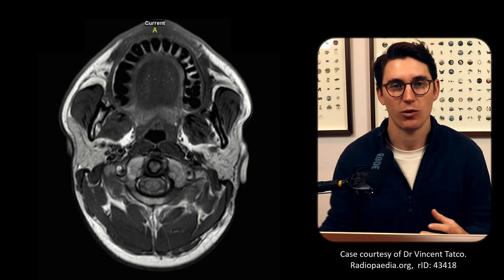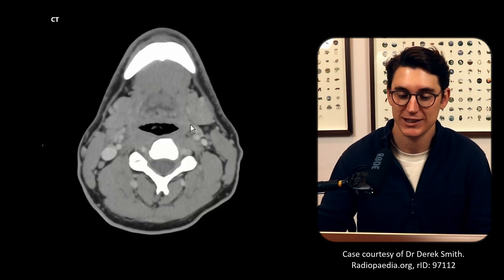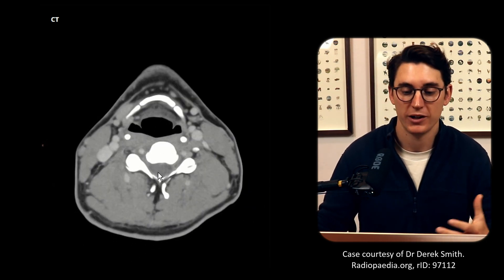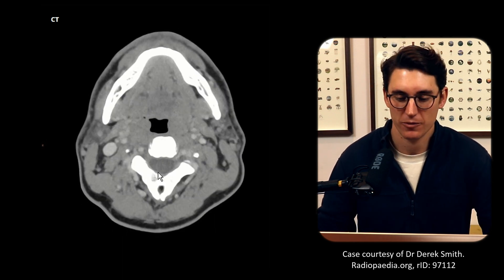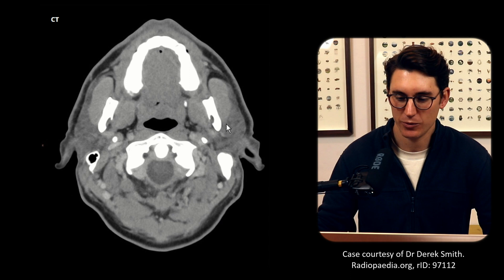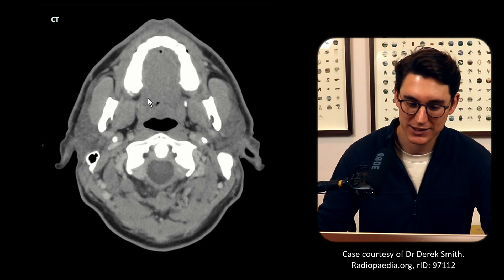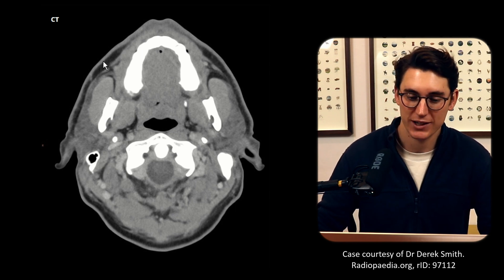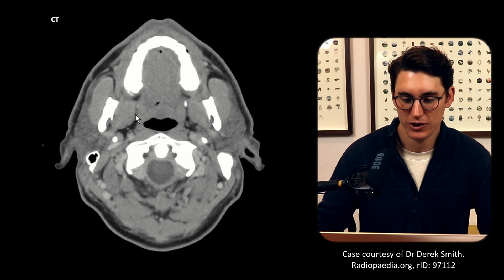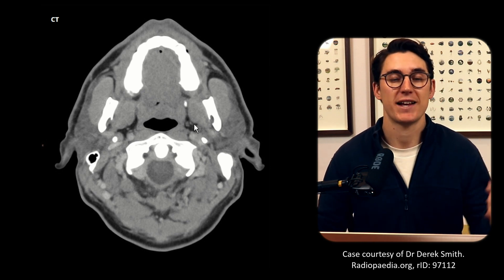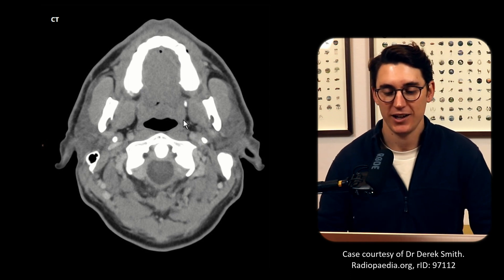Let's look at the parapharyngeal space on a CT scan, because often we'll be picking these lesions up incidentally during a CT neck or trauma scan and need to decide where a mass is coming from. Scrolling up to that same level, we can see our masticator space, our parotid space, our styloid bone, and our pharyngeomucosal space. Laterally, fat is hypodense on a CT scan, and we can see that same appearance in our parapharyngeal space. When scrolling through a scan it's good to check those fat spaces — fat is a really good clue for seeing if a mass is shifting.